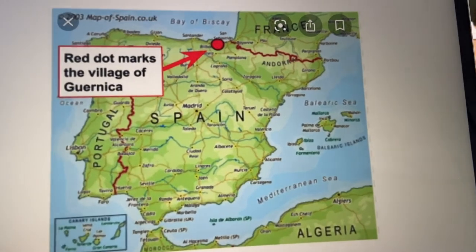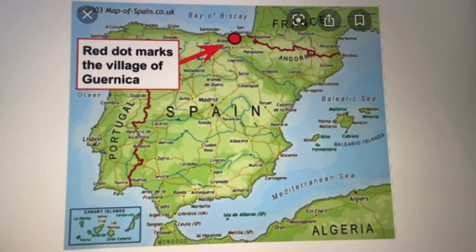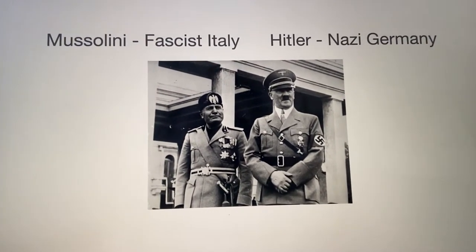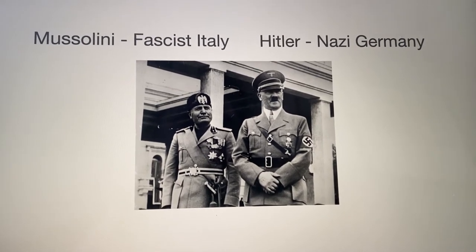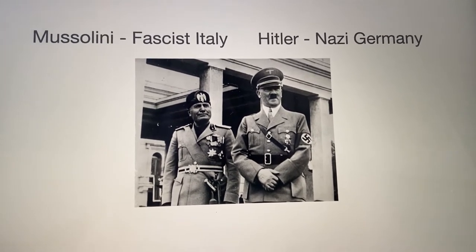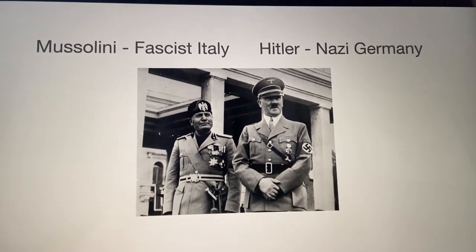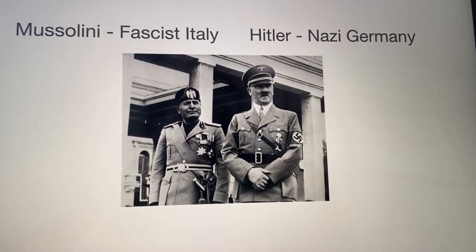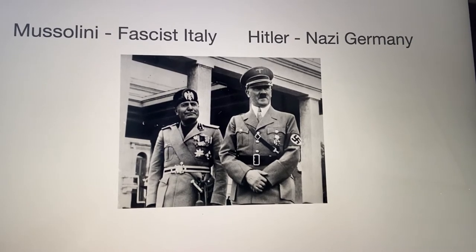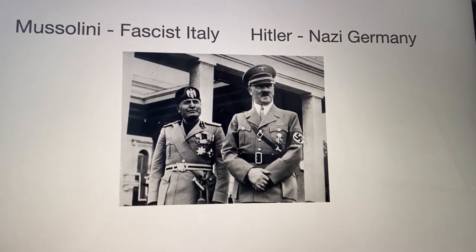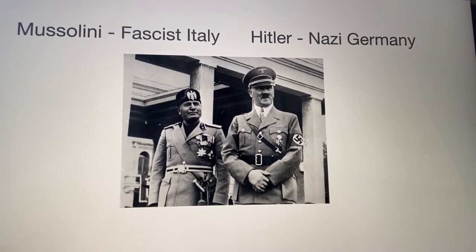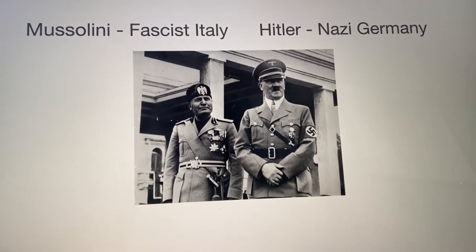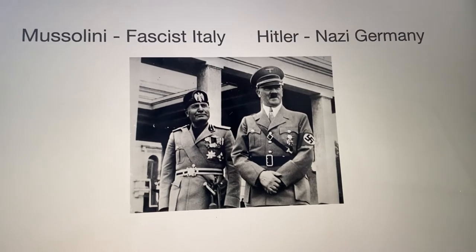So what he did was he got in touch with two men who lived across Europe and held similar views to him. The gentleman on the right is Hitler from Nazi Germany and the gentleman on the left is Mussolini, the leader of Italy — a fascist. They all had very similar views. Franco wanted to enlist Hitler and Mussolini to help him gain control of this area in Spain, knowing that if he won it, he would eventually win the Civil War. So he asked Mussolini and Hitler to bomb the village of Guernica.